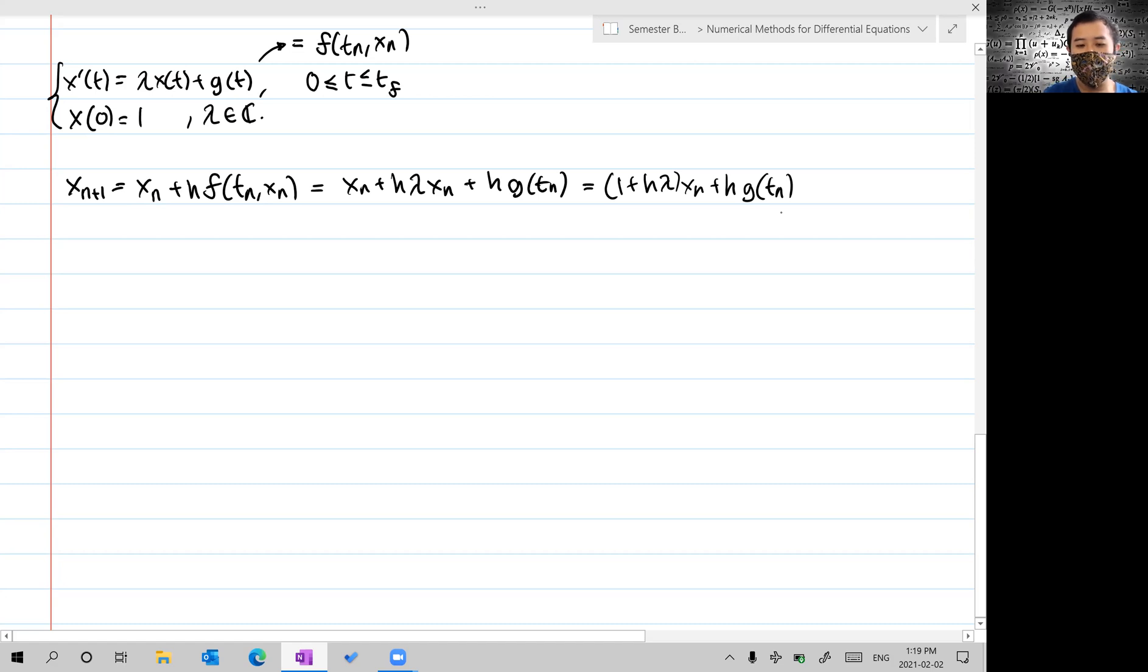If we derive this problem from the Taylor series, we can obtain x(t_{n+1}) = x(t_n) + h·x'(t_n) plus a remainder term. This equals x(t_n) + h[λx(t) + g(t)] plus the remainder term.